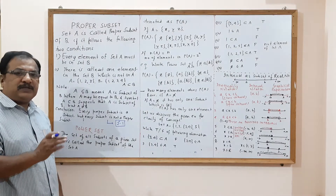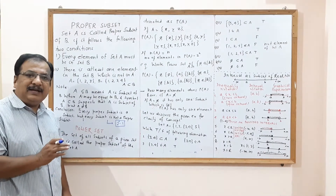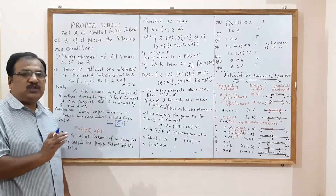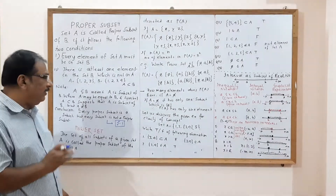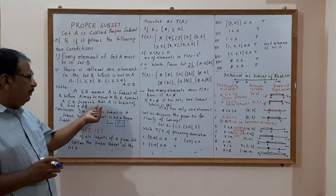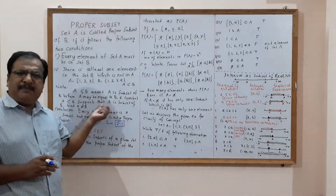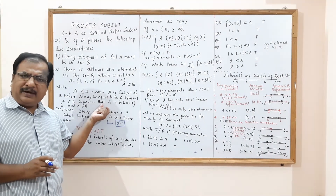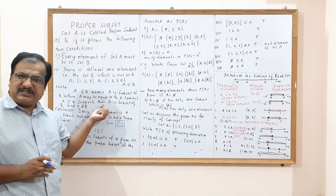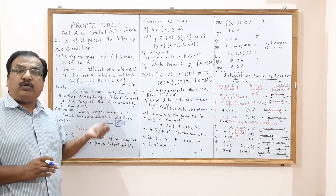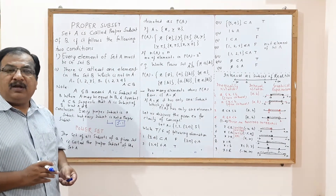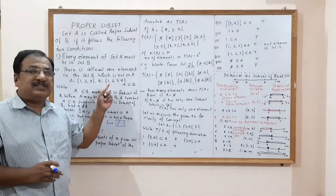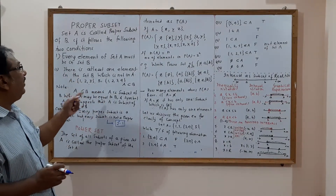So A is a proper subset of B means A should be a subset of B and A should not be equal to B. If a set has N elements, the number of subsets is 2^N. So the number of proper subsets is 2^N minus 1, because every set is a subset of itself.